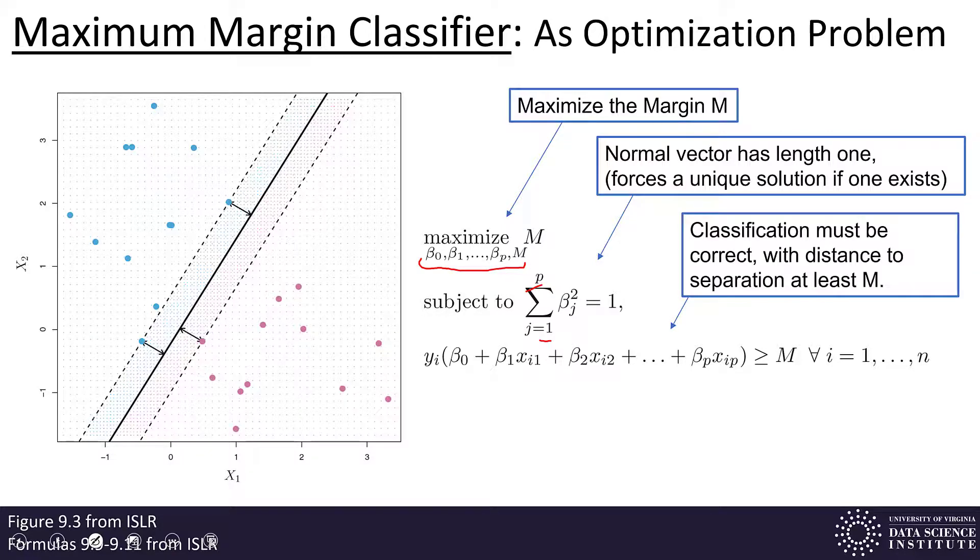And this third line in the optimization says that the classification must be correct, with distance to the separation curve, the separation hyperplane at least M. And so, this part in this formula is the set of feature variables for an observation, for observation i, evaluated at the formula for the hyperplane.